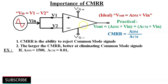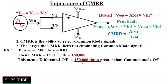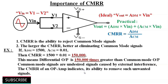Suppose the differential amplifier has a differential gain of 1500 and a common mode gain of 0.01. Then CMRR = ADM / ACM = 1500 / 0.01 = 150,000. This means the output produced by differential signals between the inputs would be 150,000 times greater than the output produced by common mode input signals. The ability to reject common mode signals is one of its main advantages, as common mode signals are usually undesired signals caused by external interference. The CMRR indicates the op-amp's ability to reject such unwanted signals.